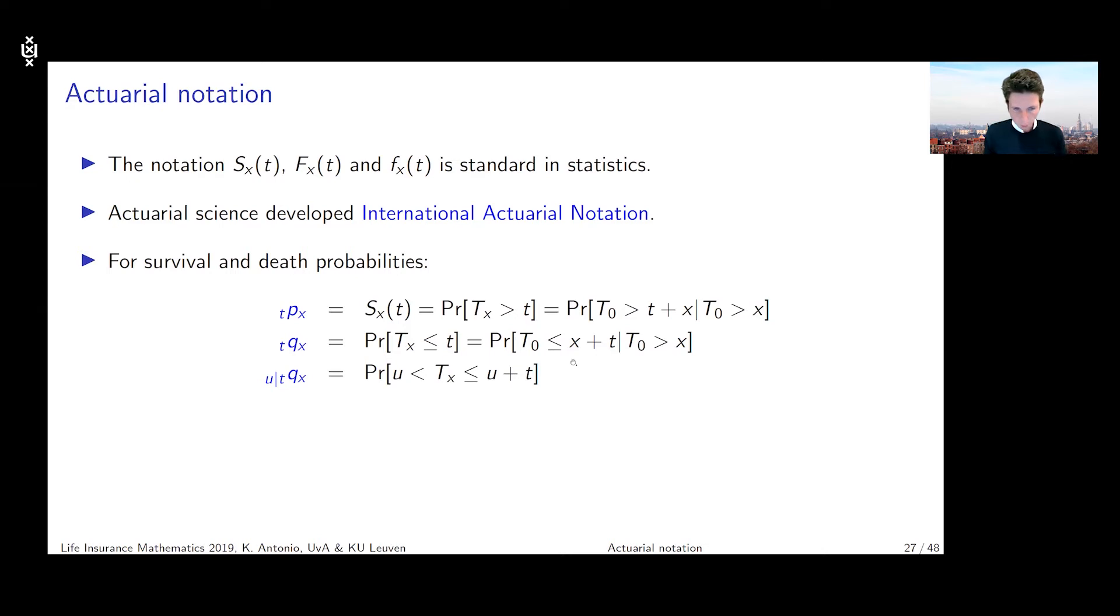Now one probability here that or one symbol that we're also going to introduce here, which is a little bit more difficult perhaps, is the notation for a deferred mortality probability. So I denote it here with _u|_tq_x. And what does that mean?